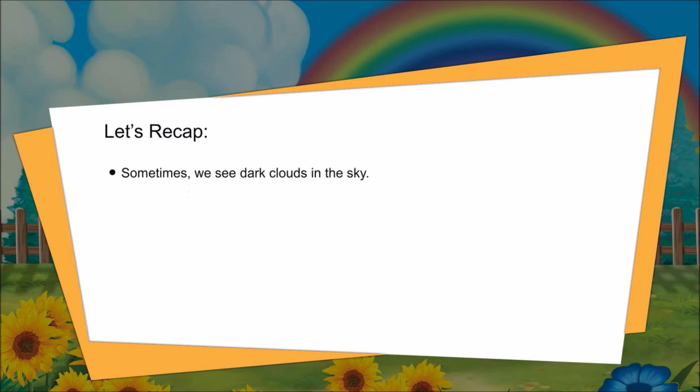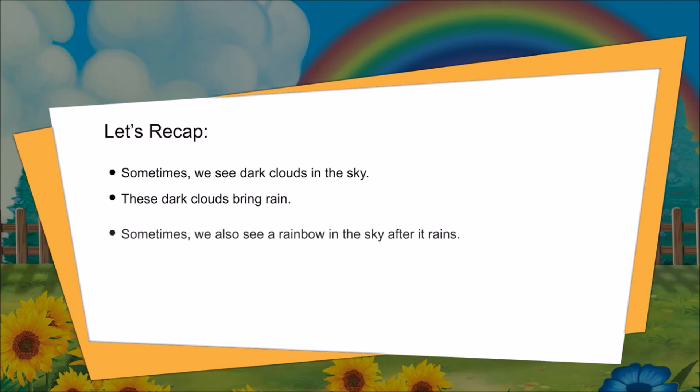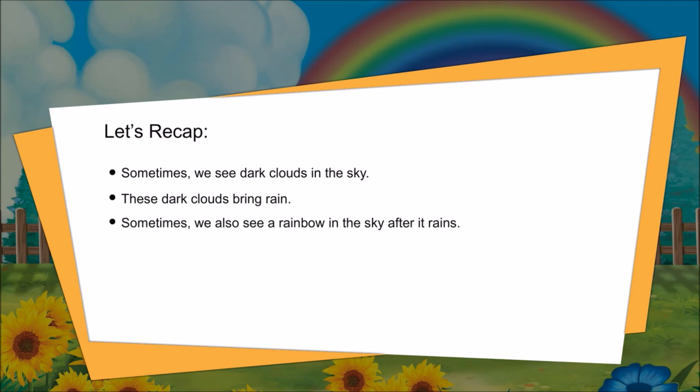Let's recap. Sometimes we see dark clouds in the sky. These dark clouds bring rain. Sometimes we also see a rainbow in the sky after it rains.